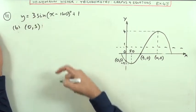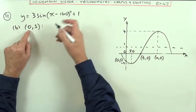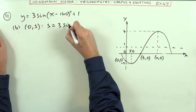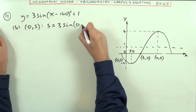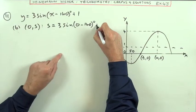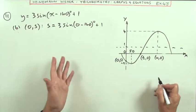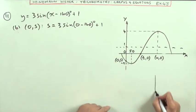Well, just substitute it into the equation then because it must fit it if it's on it. So S is the Y coordinate is 3 sine and X is 0 minus 140 plus 1. And you just type that into your calculator. You don't need to mess about by saying what is 140 equivalent to?